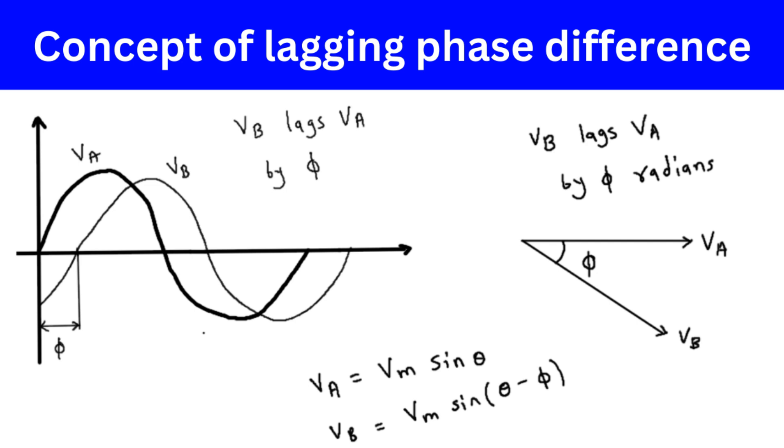Then we represent Vb as a phasor vector pointing in the direction that is Φ degrees behind Va in the counterclockwise direction, since Vb is lagging Va.